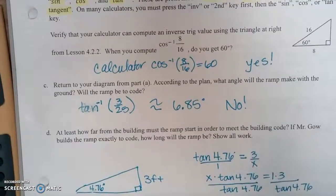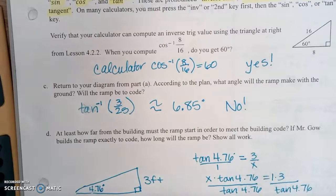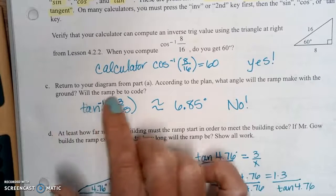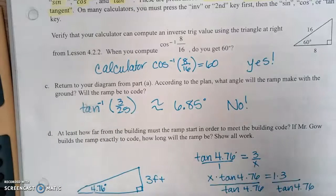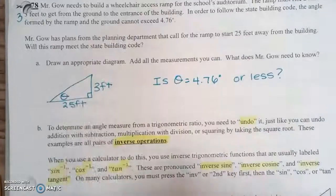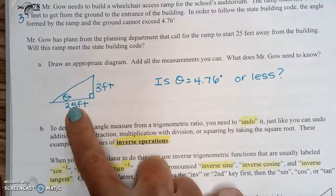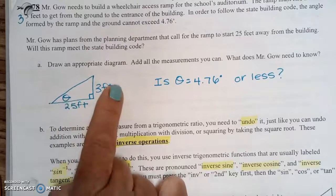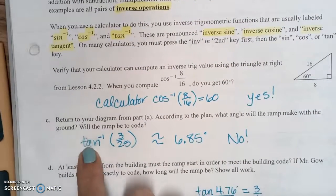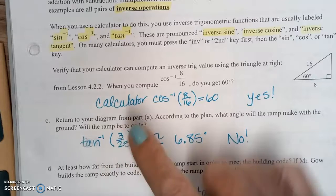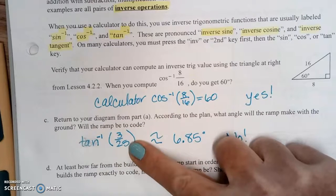Part C says, return to your diagram from part A. According to the plan, what angle will the ramp make with the ground? Will the ramp be to code? So if we look back up at part A for Mr. Gao, he needed to have 3 feet here and 25 feet here. So from that angle, that's opposite and adjacent. So we're going to use the tangent, but we have to use inverse tangent because we want the angle. And we're going to say the opposite, which was 3, over the adjacent, which was 25.